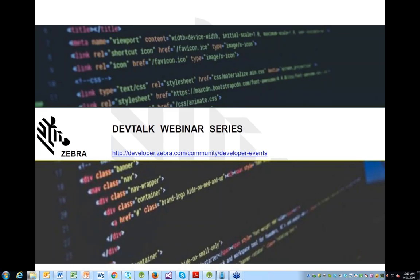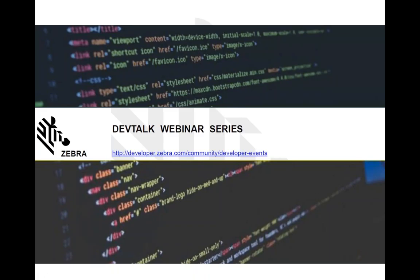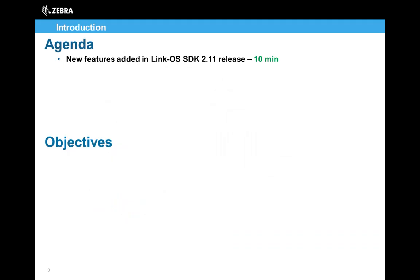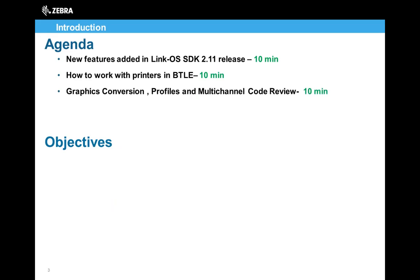Today I'm going to be covering the updates we've done to our Link OS development tools. The agenda for this presentation covers the new features added to SDK 2.11, how to bring these to practice with printers in Bluetooth Low Energy, a discussion of graphic conversions, profile and multi-channel features, a coding review, and a refresh of the other tools and features we have.